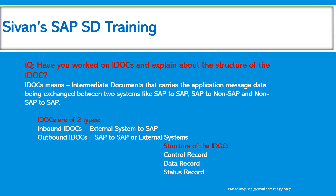Have you worked on IDocs and can you explain the structure of the IDoc? An IDoc is an intermediate document that carries the application message data exchanged between two systems — SAP to SAP, SAP to non-SAP, and non-SAP to SAP. IDocs are of two types: inbound IDocs, which come from external systems to SAP, and outbound IDocs, which go from SAP to external or third-party systems. The structure of an IDoc consists of a control record, data record, and status record.